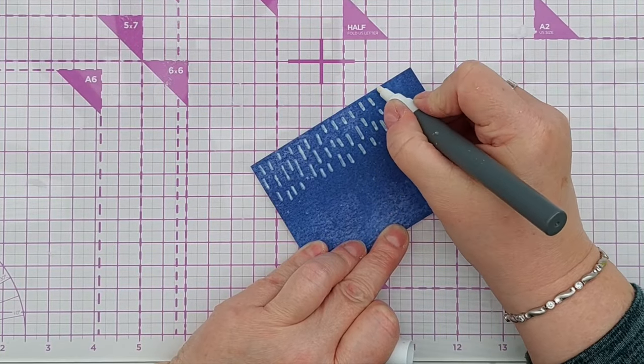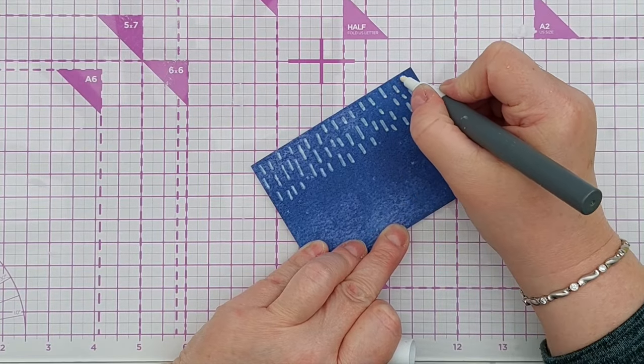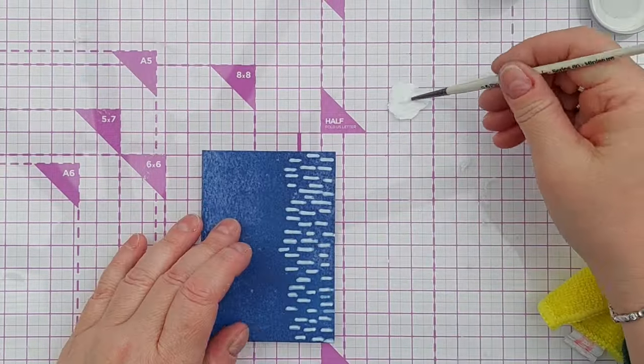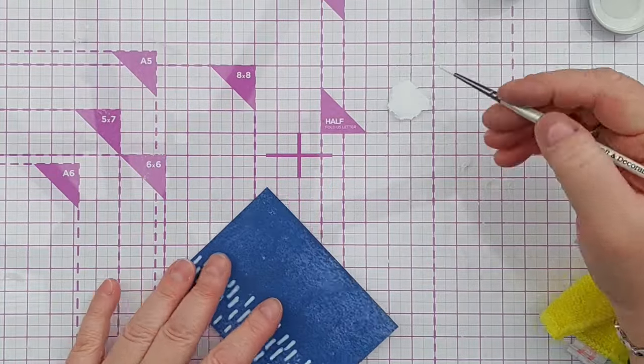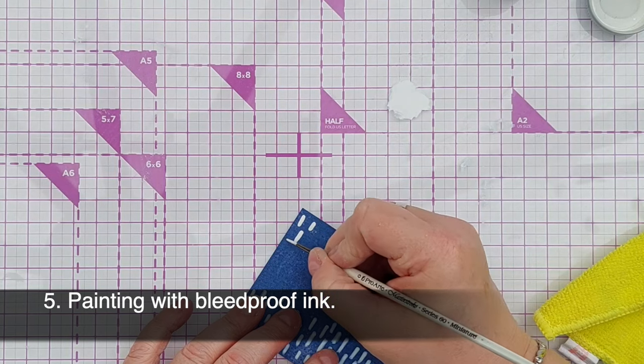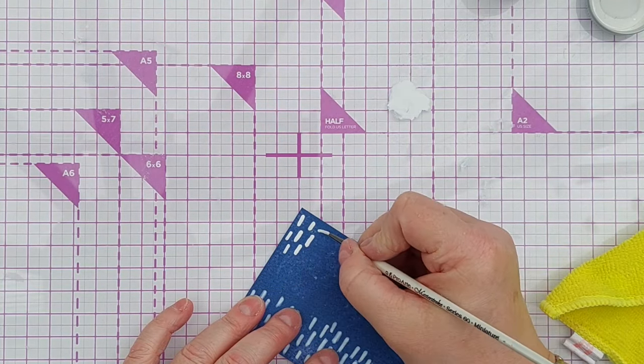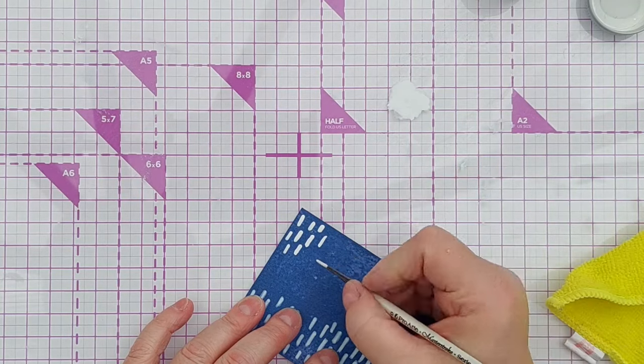Once I finished that, I remembered I had some bleed proof white ink, so I thought I'd give that a go to see how blue the white ink would tint. So I popped some on my glass mat, added a little bit of water, and took a paint brush.